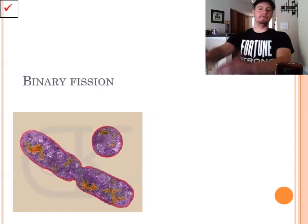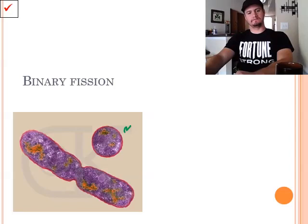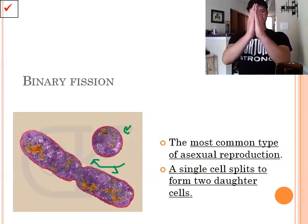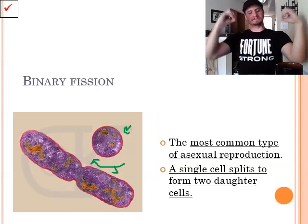So, binary fission. Fission means to split. Binary, we're talking about two. So, we're going from one cell to two cells. Now, it is the most common type of asexual reproduction. It's where a single cell splits to form two daughter cells. So, we have our original cell. And what it does is it pinches itself, basically, until it splits into two.